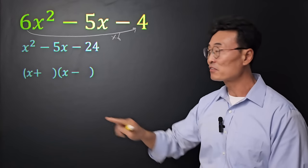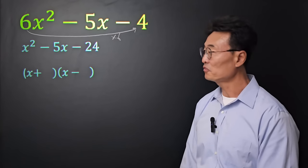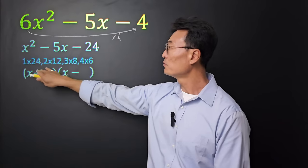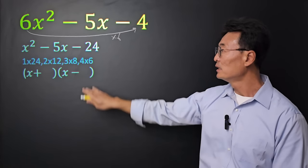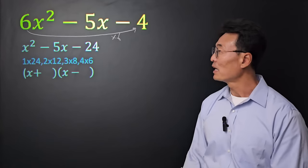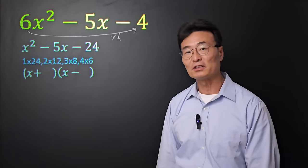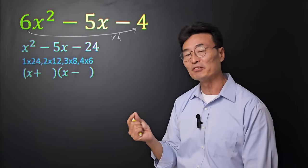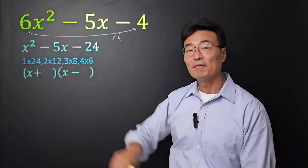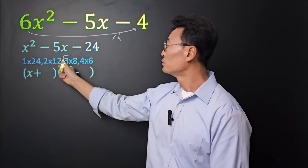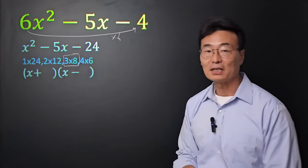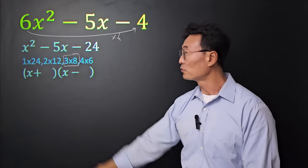Again, we need to find two numbers that multiply to 24 first, which are 1 and 24, 2 and 12, 3 and 8, 4 and 6. And this time, instead of adding, because the two signs are opposite of each other, we want to find two numbers where we subtract and get 5. And it's going to be 3 and 8, because 8 minus 3, of course, is 5.